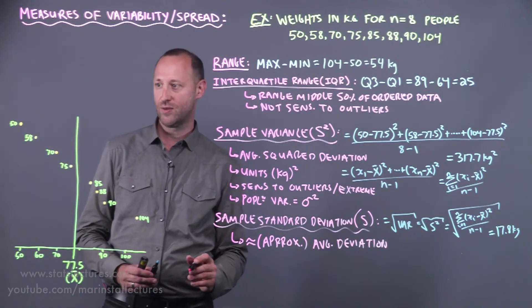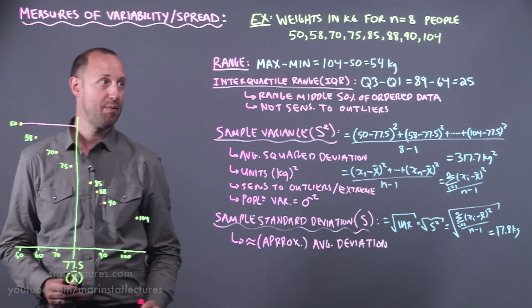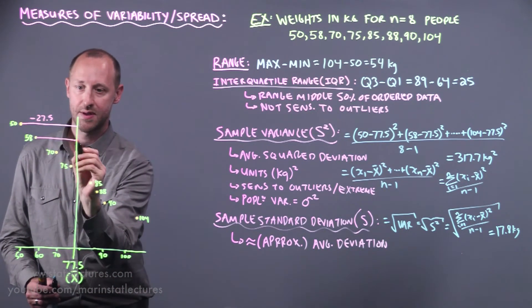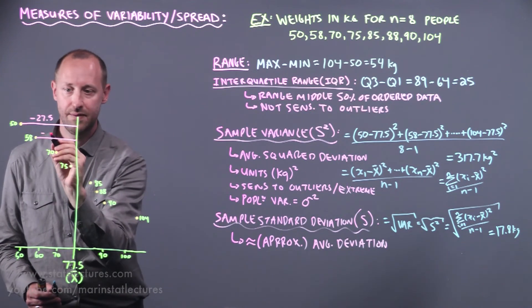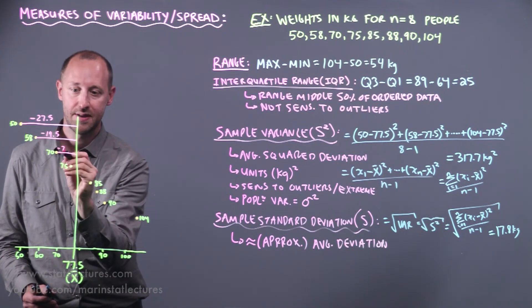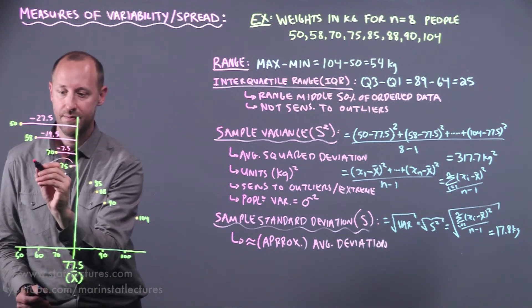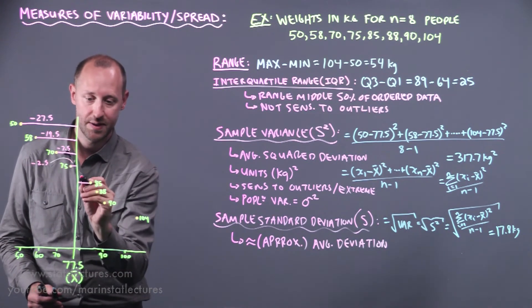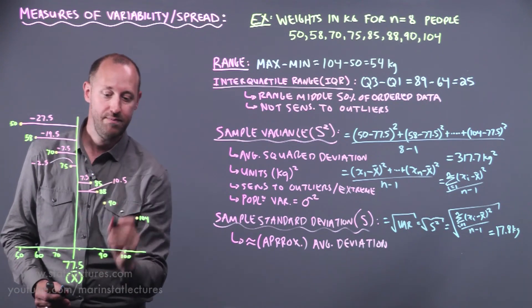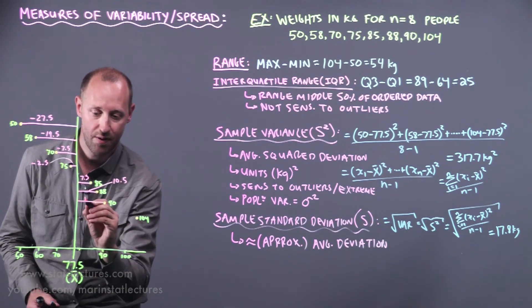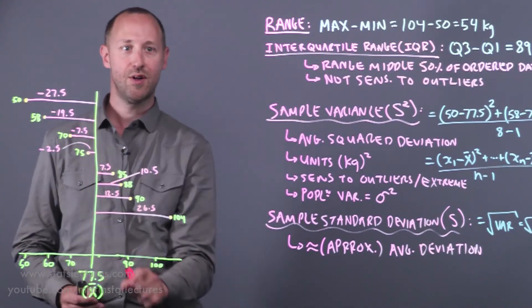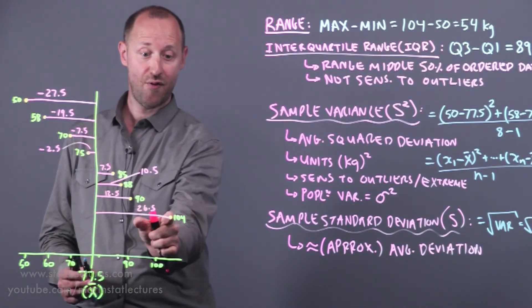Let's draw that in so we can visualize. The first observation was 50 and that was 27.5 kilograms below the mean. The weight of 58 was 19.5 kilograms below. The 70 kilograms is 7.5 below. The 75 is 2.5 below. The weight of 85 kilograms is 7.5 kilograms above. The 88 is 10.5 above the mean. The 90 kilograms is 12.5 above. And that weight of 104 kilograms is 26.5 above.